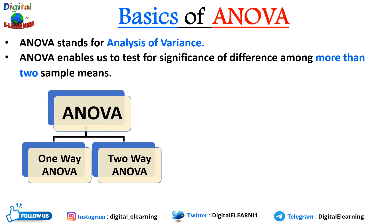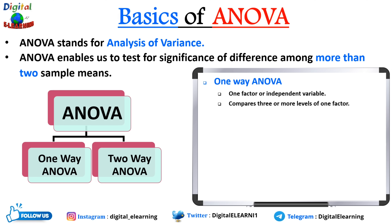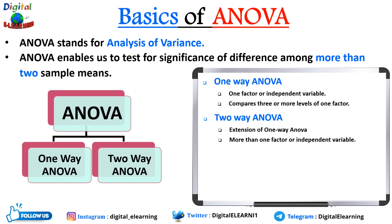ANOVA is basically of two types: one-way ANOVA and two-way ANOVA. One-way ANOVA involves only one factor or independent variable and it compares three or more levels of that one factor. Two-way ANOVA is an extension of one-way ANOVA where more than one factor or independent variable is present, and it compares the effect of multiple levels of two factors.